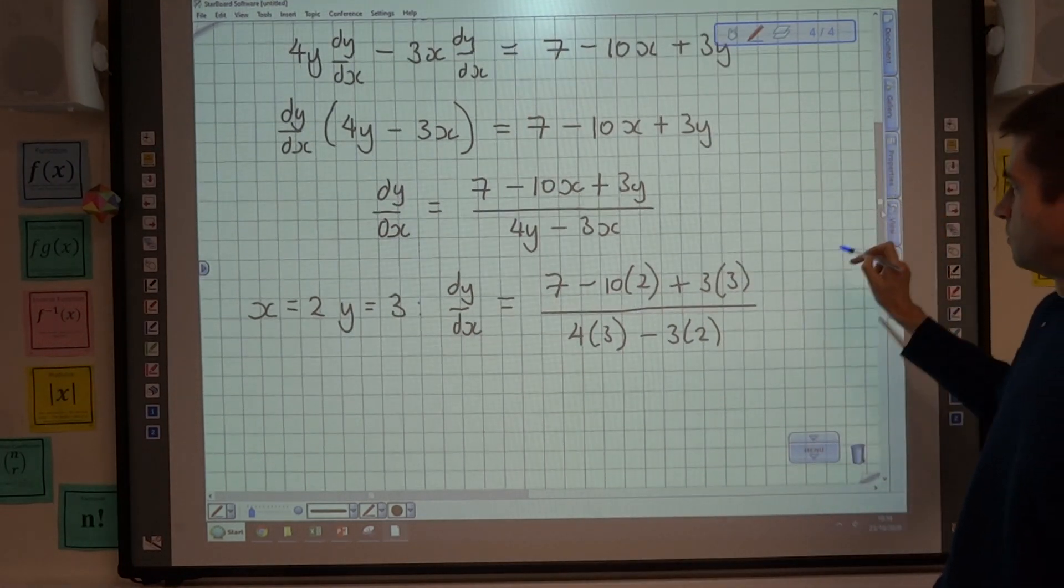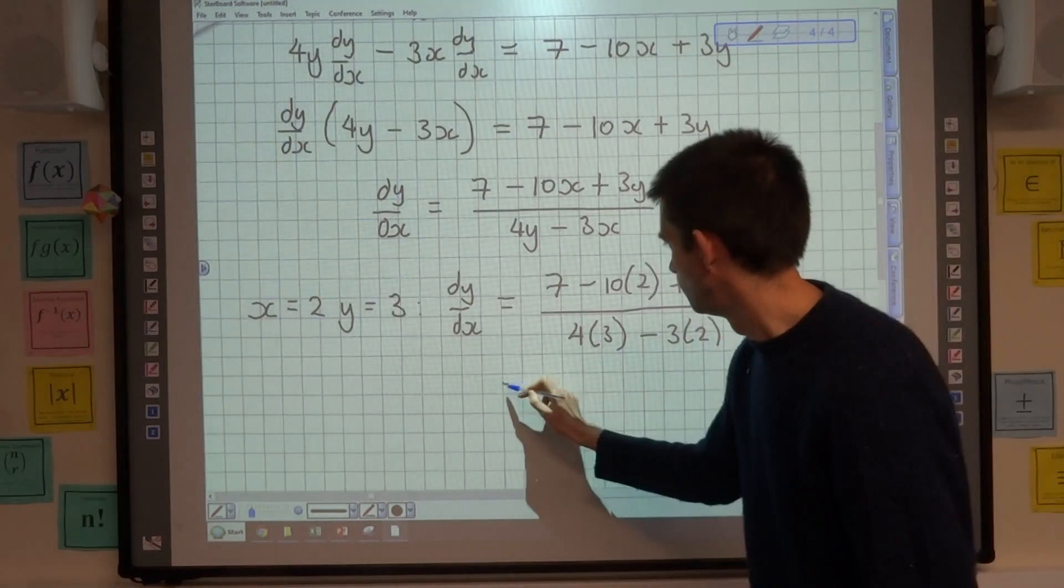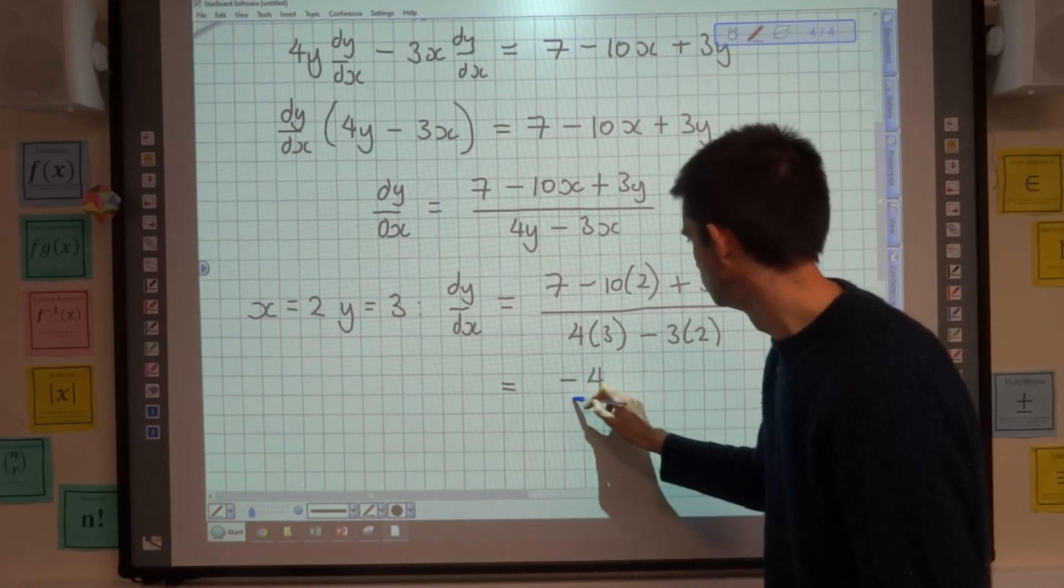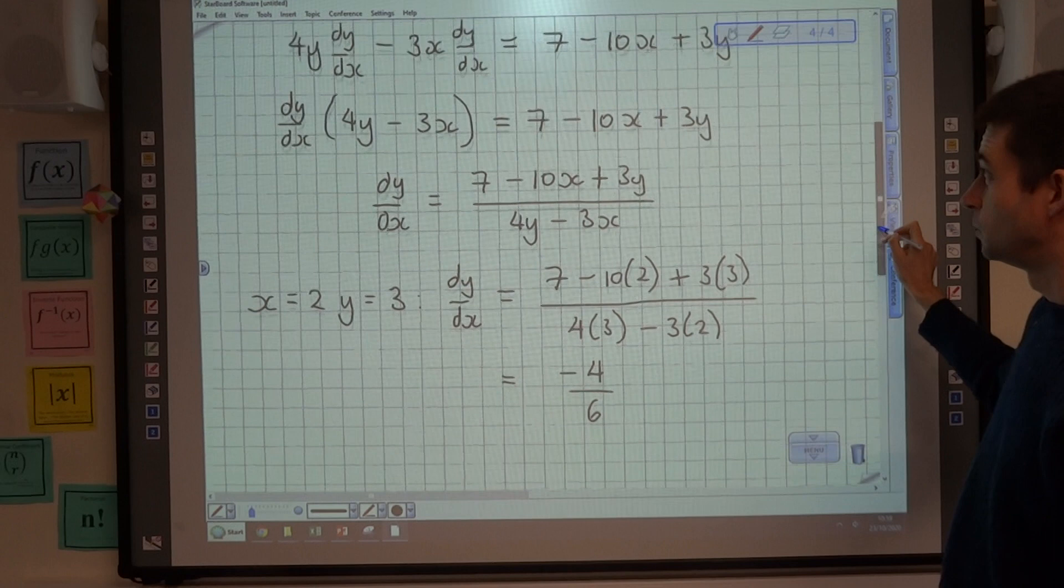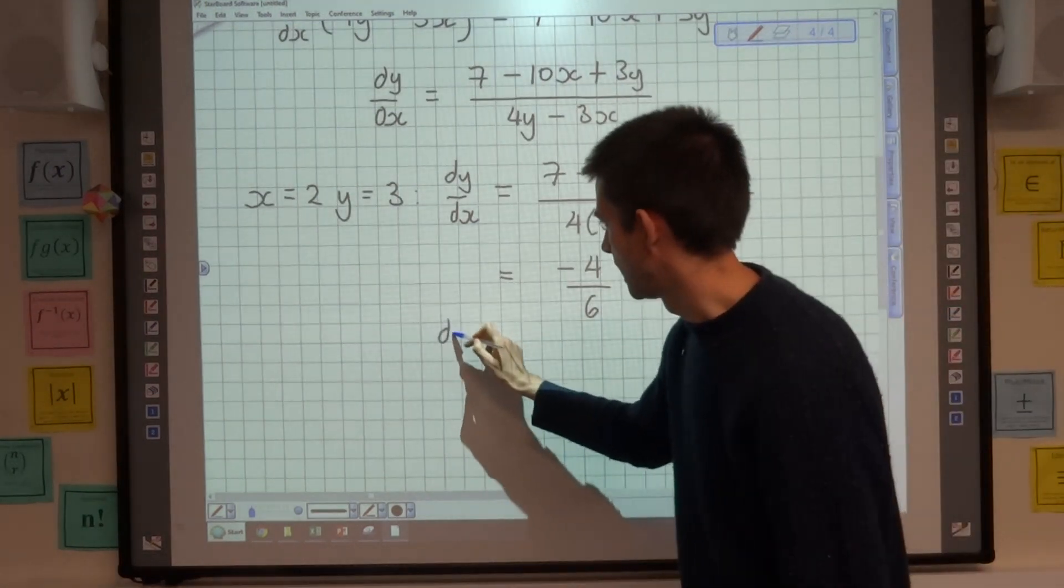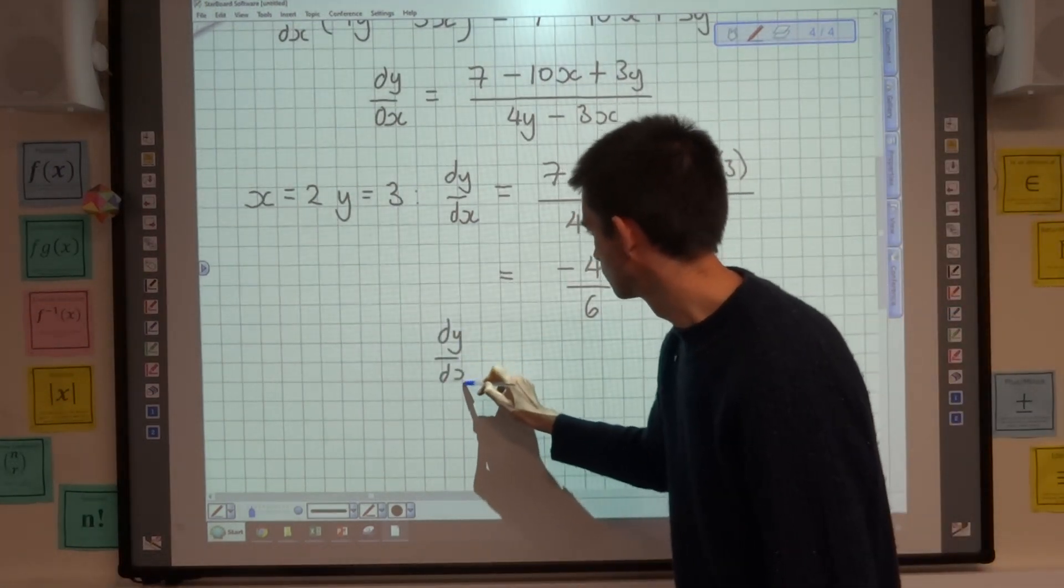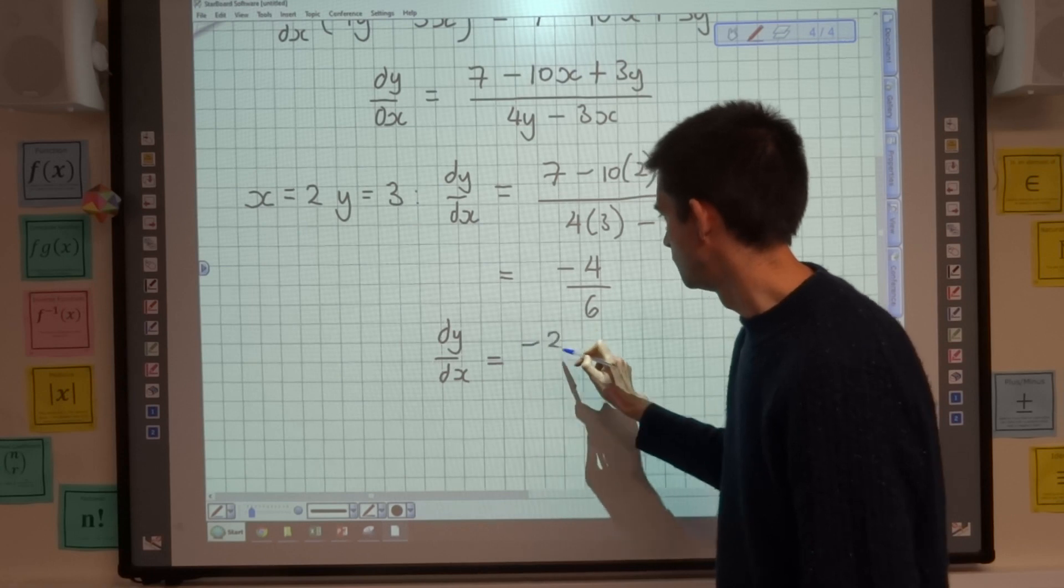Which is going to give me -4 over 6, so dy/dx, the value of the gradient at that point on the curve, is going to be -2/3.